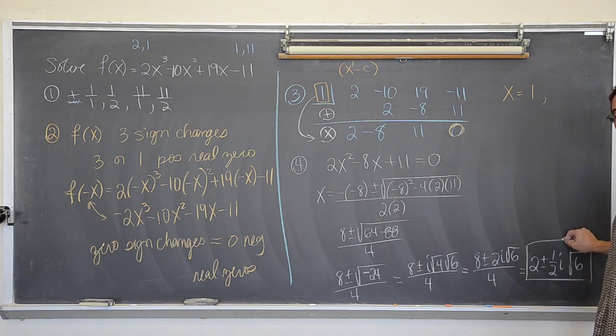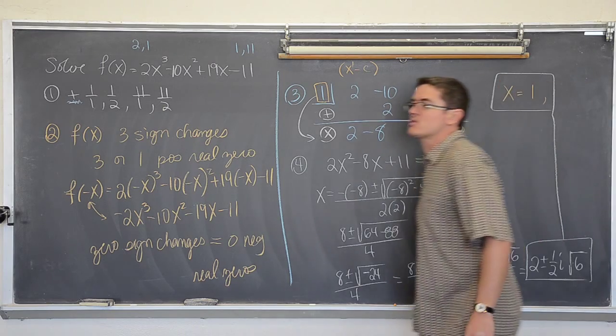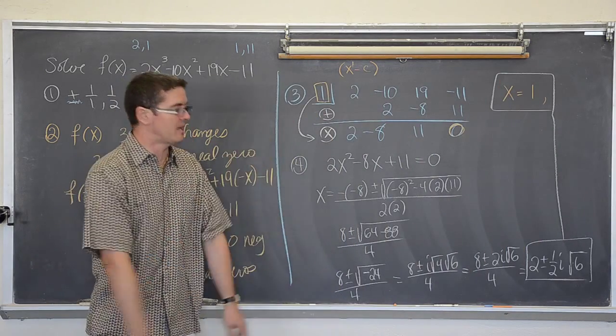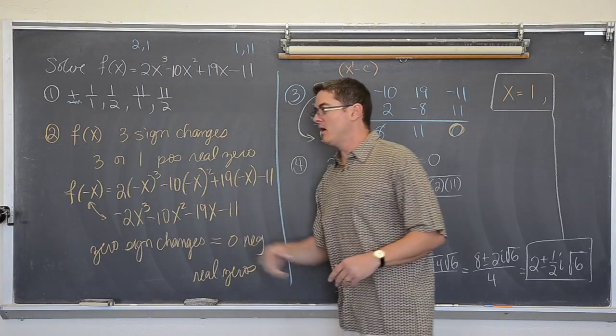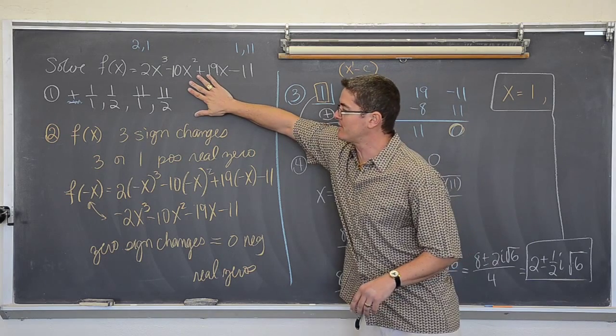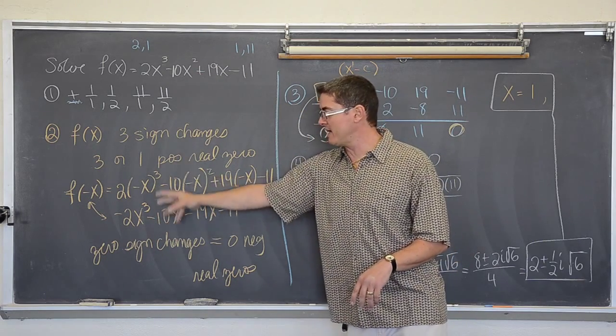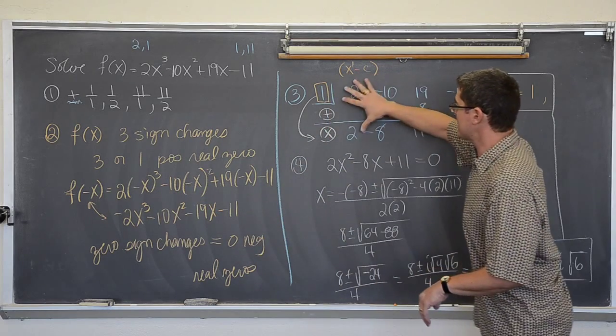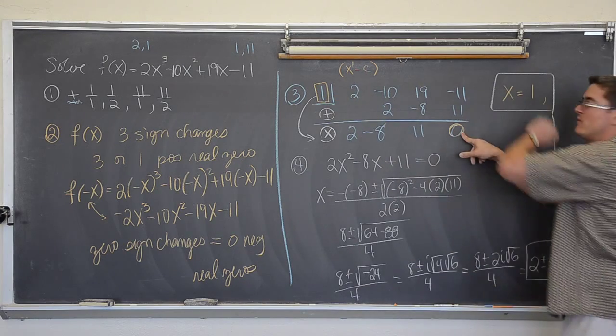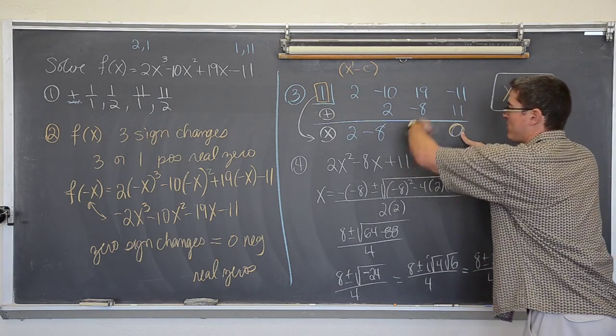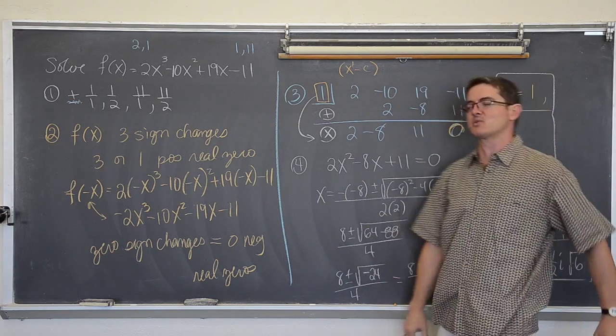So voila! We have got two complex solutions paired up with our one real solution that we found with synthetic division. There again is another example of solving higher order equations. You start off with the rational zero theorem. Descartes rule might help you eliminate some of your trial and error. Do that synthetic division until you find a remainder of zero. Keep that process going until you get to a degree of 2 and finish it with the quadratic formula or factoring.